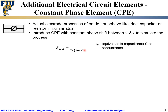Y₀ can be viewed as equivalent to capacitance C or to conductance, which is 1/R. Whether it behaves as capacitance or conductance depends on the alpha value. Alpha is the exponent ranging from 0 to 1. If alpha equals 0, then jω to the power of 0 is just 1, and the CPE behaves like an ideal resistor. If alpha equals 1, we have 1 over Y₀·jω, which is just like an ideal capacitor.